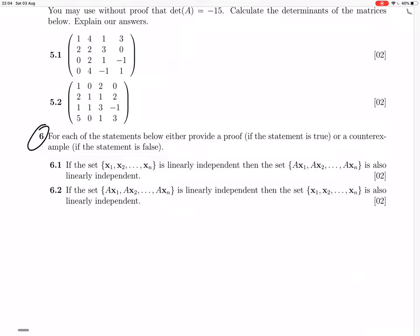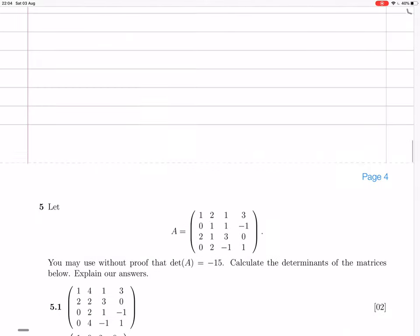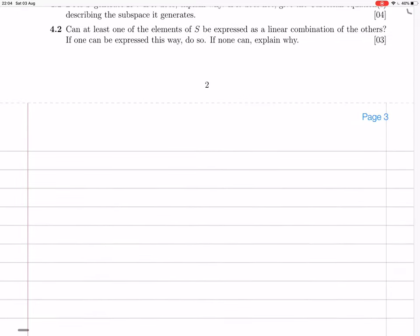So 6.1 is going to be false, and a counterexample we can give is when A equals the zero matrix. Let's put that down. 6.1 is false,